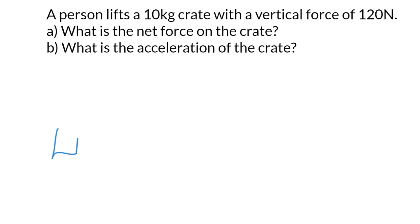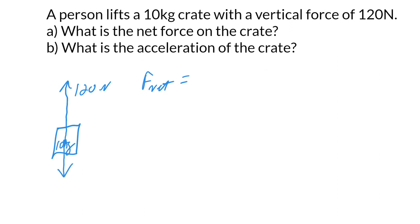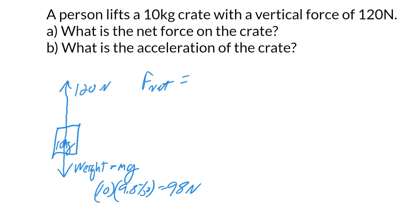Problem number two — this time we're going to be lifting the crate. We're lifting up with 120 newtons of force and again the crate is 10 kilograms. You have to be careful here because a lot of students will just say the net force is 120, however there is gravity pulling down on it, so there's going to be some weight acting on the crate. The amount of weight is simply m times g, which is 10 times 9.8 meters per second squared, so there is 98 newtons of weight.